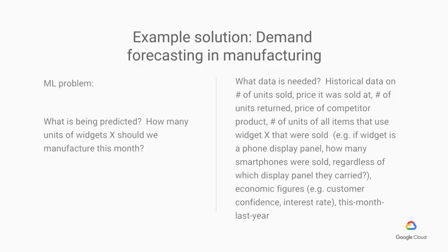When we cast it as a machine learning problem, the next question is: what data do we need? If you want to predict how many units of that widget to manufacture, we need historical data on the number of units sold — how many units did we sell last month, the month before, etc. We also need to know the price it was sold at, the number of units returned, the price of any competitor product, and the number of units of all items that used Widget X. If you are making phone display screens, how many smartphones were sold regardless of which display panel they carried. We may also need other data like economic figures, customer confidence, interest rate, and what happened this month last year.